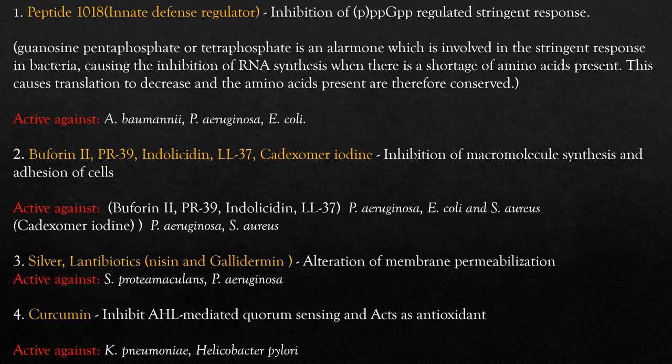The second group of molecules includes Buforin 2, PR39, Indolicidine, LL37, and Cadexomer iodine. These all share the same mechanism: they inhibit macromolecular synthesis and adhesion of cells. They have been found to be active against Pseudomonas, Staphylococcus, and E. coli.